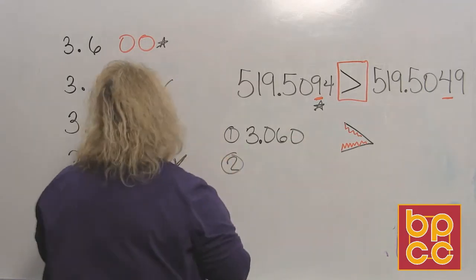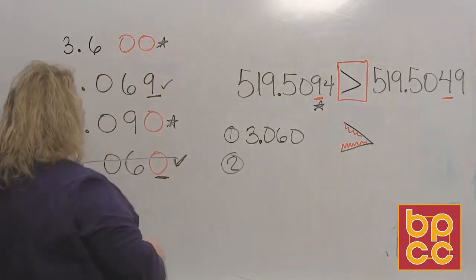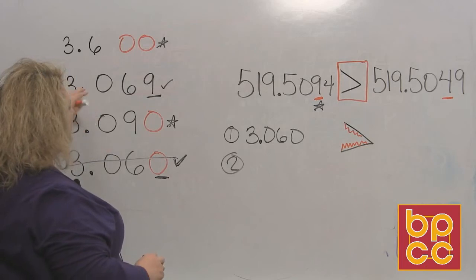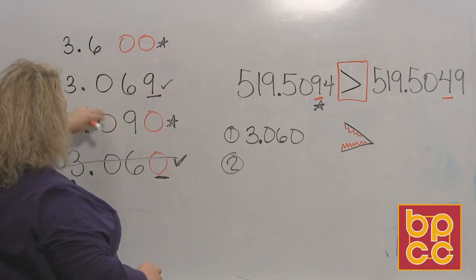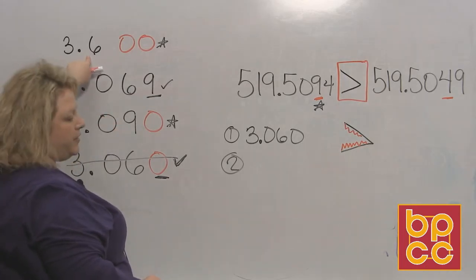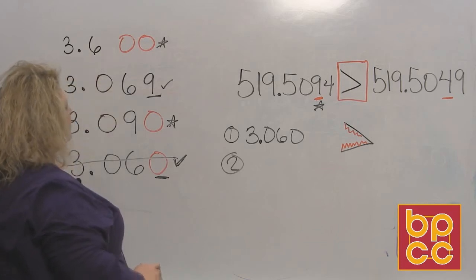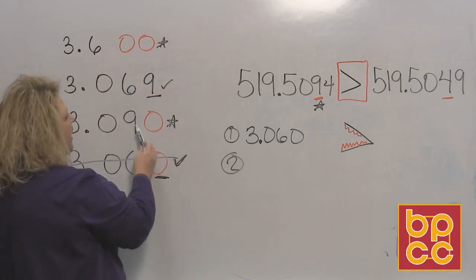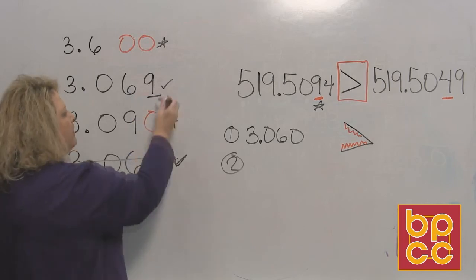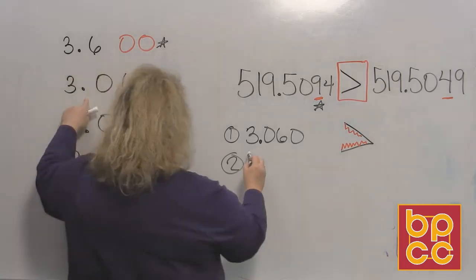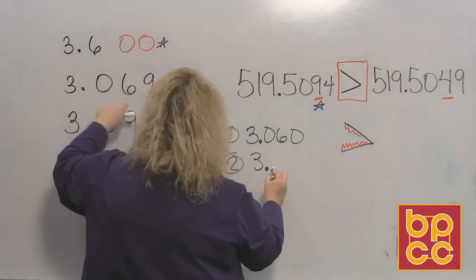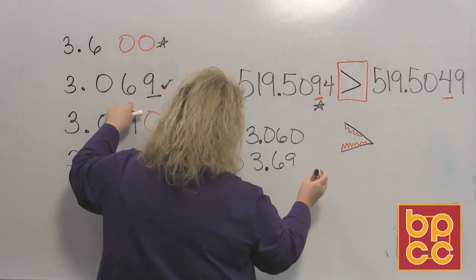We've used that one. Now which one's the smallest out of the remaining three? Well, we know it's not the very top one because we said he's too big. When I look at the second two, I have a six and a nine. Well, six is smaller than nine, so this number would be the next. That'd be 3.069.